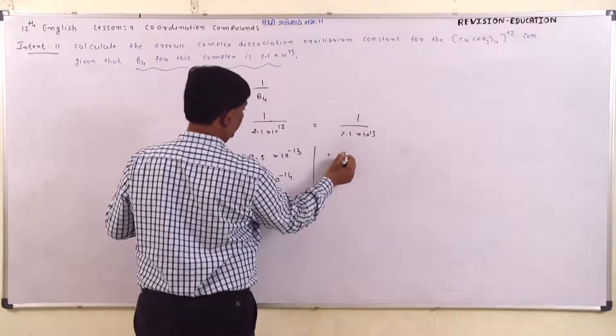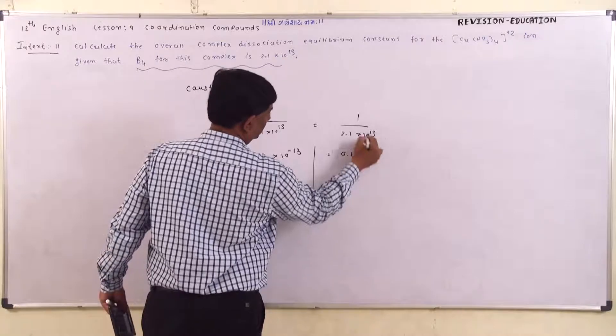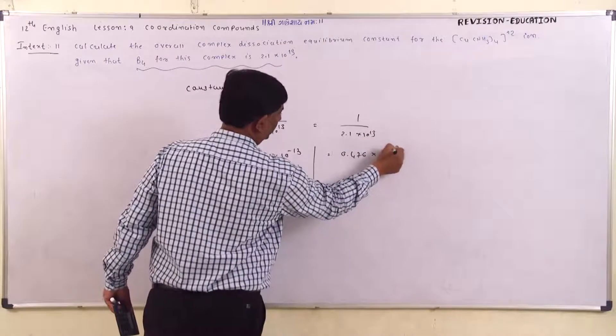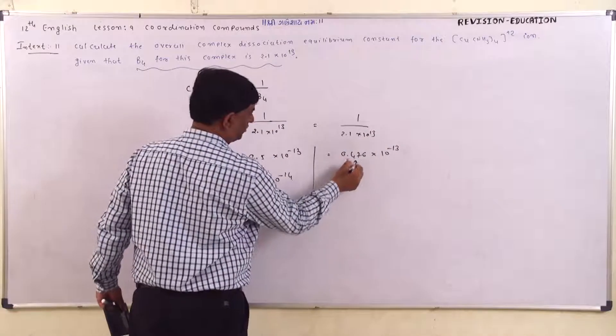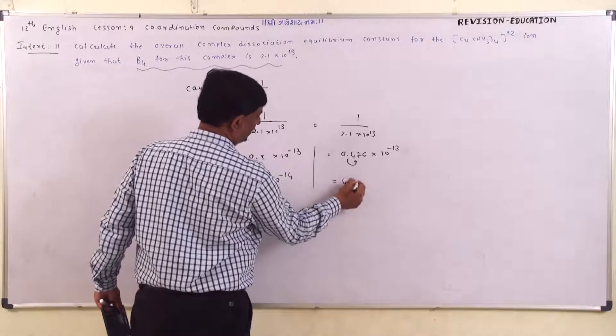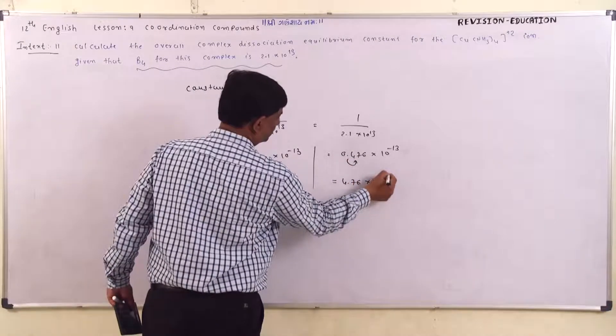The division gives 0.476. So we have 0.476 × 10⁻¹³, which equals 4.76 × 10⁻¹⁴.